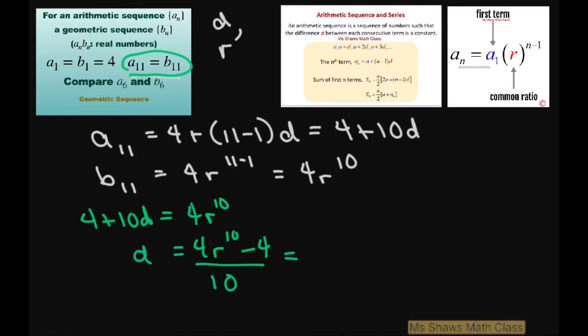We can simplify this by dividing each term by 2, so that would give me 2 times r^10 minus 1, divide it by 5, factor that out. So that is your d.